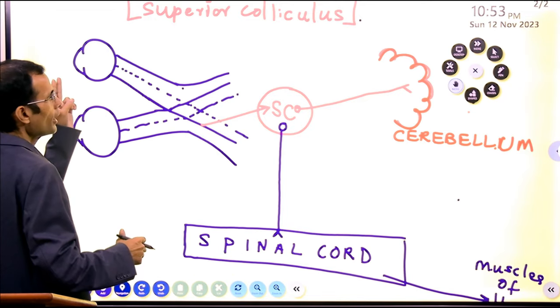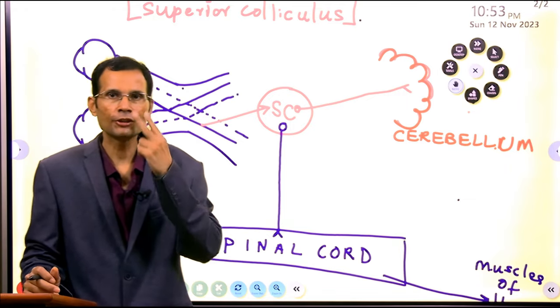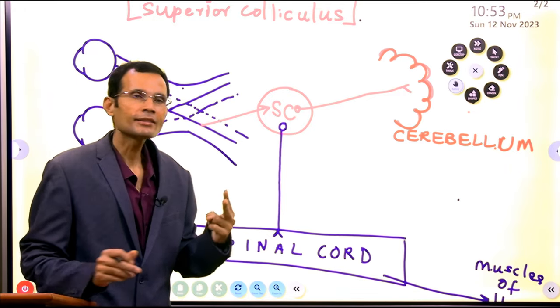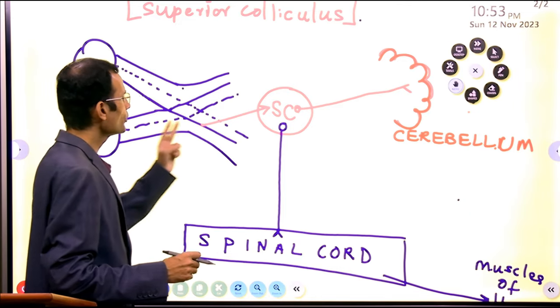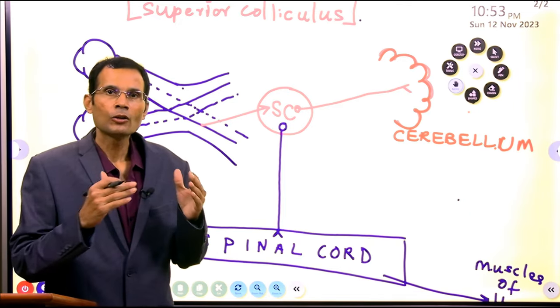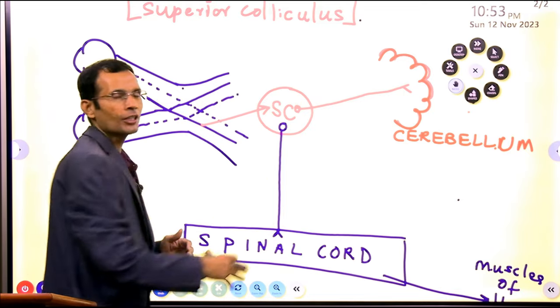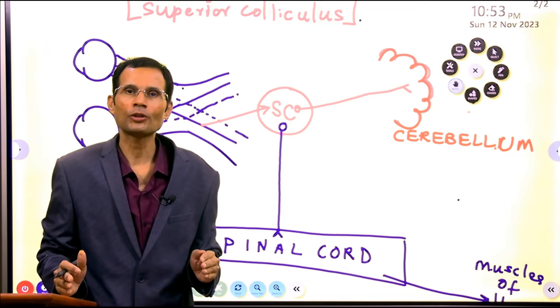Now, eye, that is vision, visual input is sent via the visual pathway, second cranial nerve and the visual pathway. And one collateral is sent to a structure called as superior colliculus.